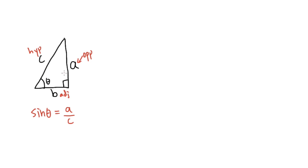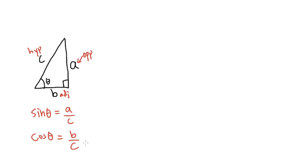Likewise, can we also do cosine theta? Well, by definition in the right triangle, cosine theta is the adjacent side over the hypotenuse — in this case that will be b over c. So these are the ingredients that we need.